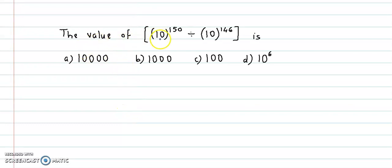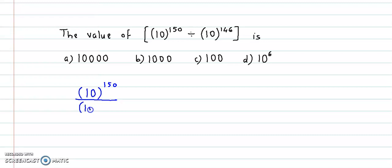The value of 10 raised to 150 divided by 10 raised to 146 is — here we have been given 10 raised to 150 divided by 10 raised to 146. This is of the form a raised to m upon a raised to n, which is equal to a raised to m minus n. So we apply this law of indices over here.